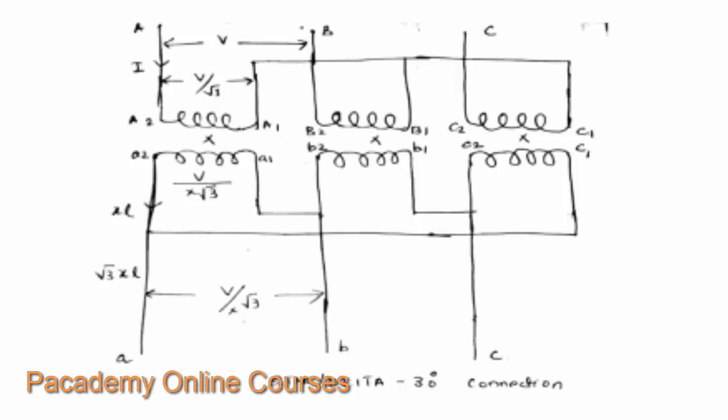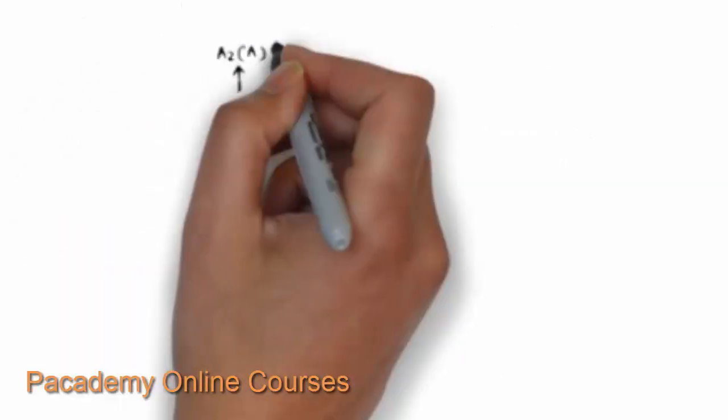Also, the voltage is transformed in direct ratio of the transformation ratio. And at the delta side, the voltage available will be V by root three times the transformation ratio.